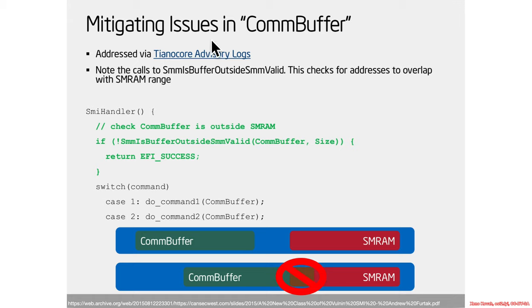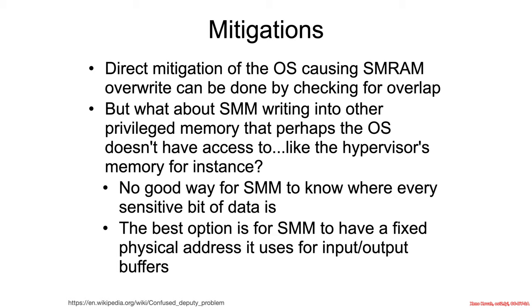This has been partially mitigated in open source code by introducing a call to SmmIsBufferOutsideSmmValid, which checks that wherever it's trying to write should be outside of SMRAM — so it's not clobbering itself. But that's really just a partial mitigation, because there are other privileged entities, especially in modern Windows systems with virtualization based security. If the SMI handler just says it's not in SMM so it's not my problem and writes wherever the attacker says, then an attacker jailed inside VBS could write outside that virtualization jail and clobber the hypervisor or more privileged virtual machines.